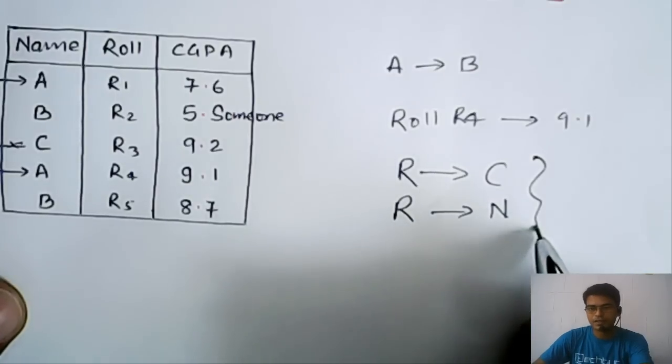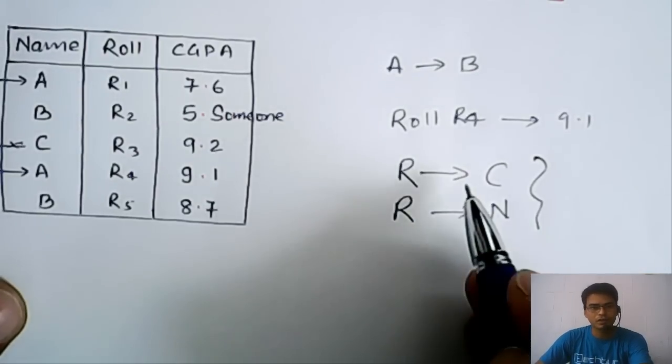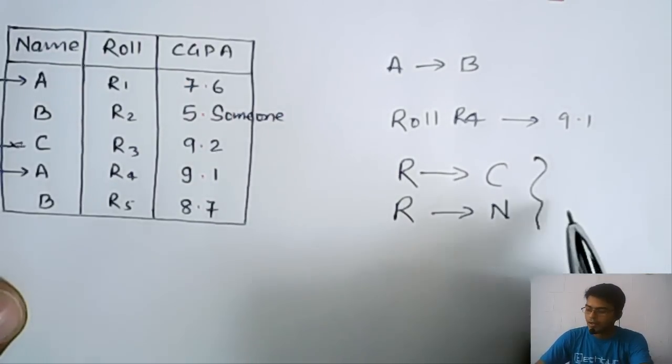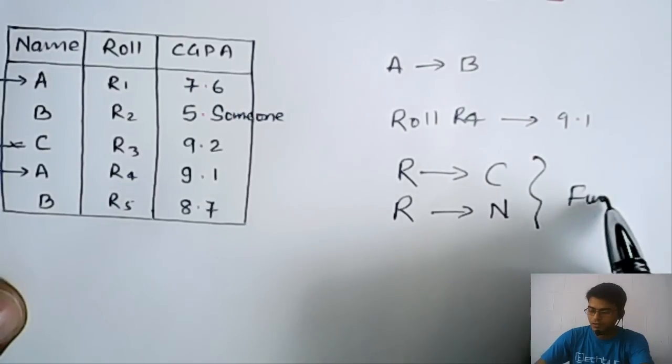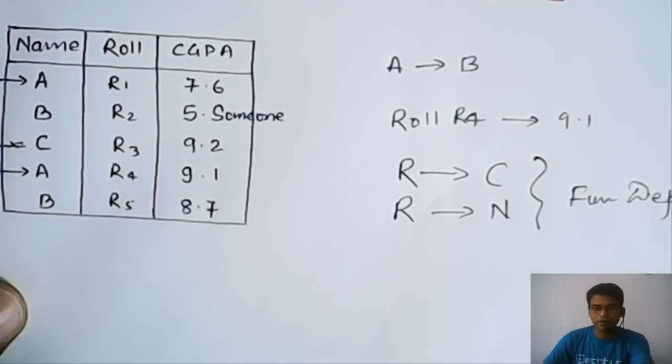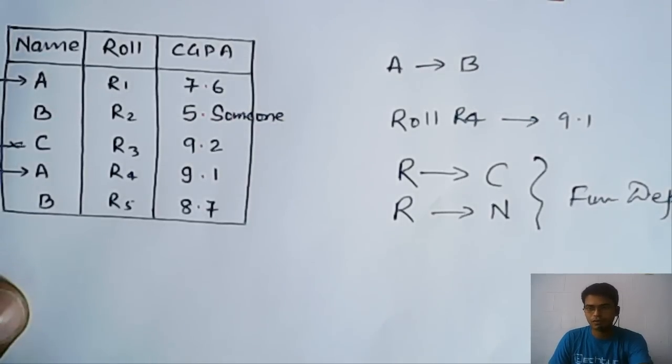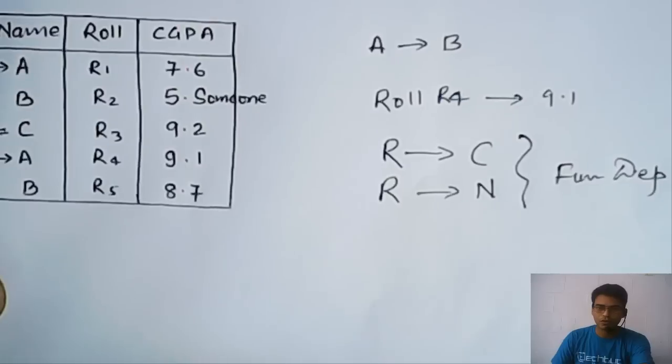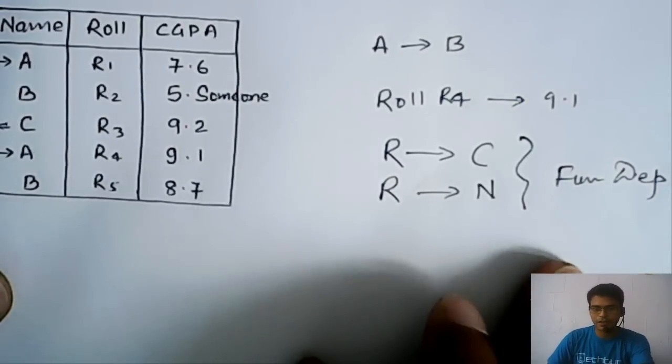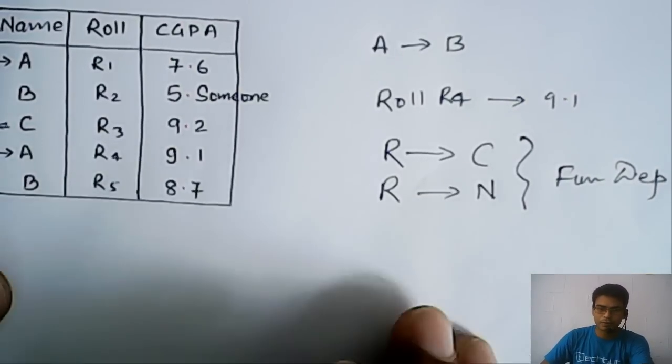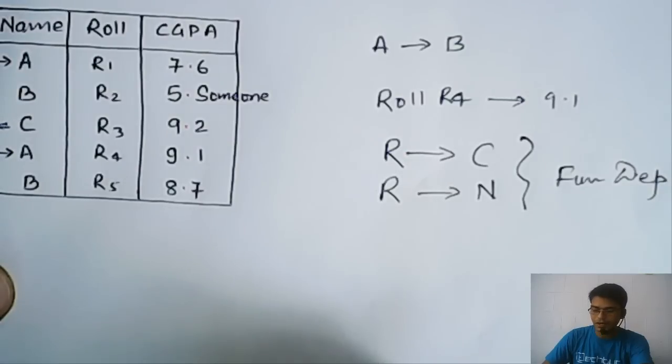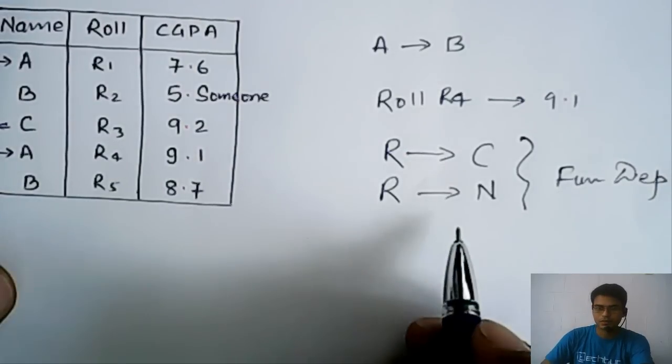In short, we are establishing relationships between the attributes, and this is called functional dependencies. Every time it is not possible to draw a table while studying the topics, so in further lectures we will be representing the relationships among attributes by this notation.